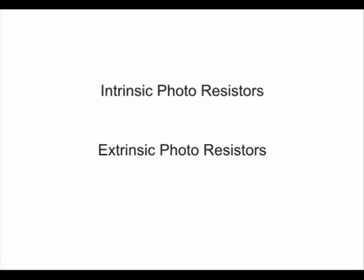Extrinsic photoresistors. These are semiconductor materials doped with impurities which are called as dopants. These dopants create new energy bands above the valence band which are filled with electrons. Hence, this reduces the band gap and less energy is required in exciting them. Extrinsic photoresistors are generally used for long wavelengths.